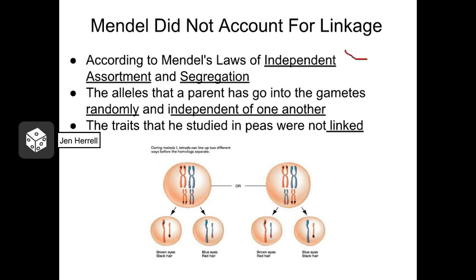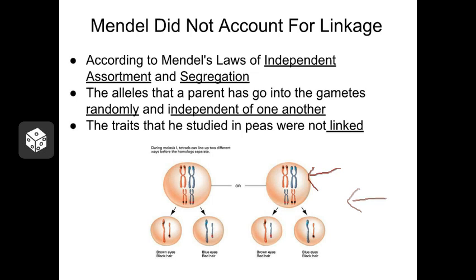Mendel described two laws — the law of independent assortment and the law of segregation. These laws help describe how traits are passed from parent to offspring in random combinations. Today, we know that this is mostly true because of how chromosomes behave during meiosis. Remember that during meiosis, the maternal and paternal chromosomes get all mixed up together through crossing over and then separate from one another through two separate divisions.